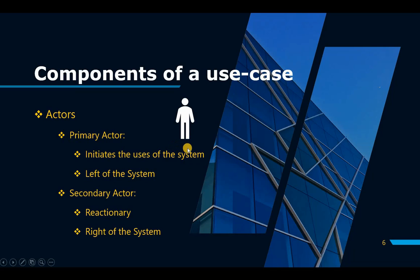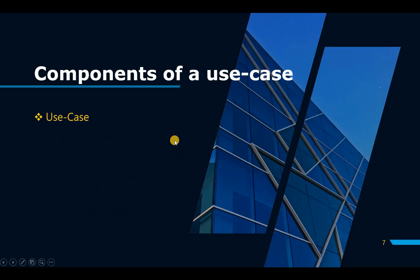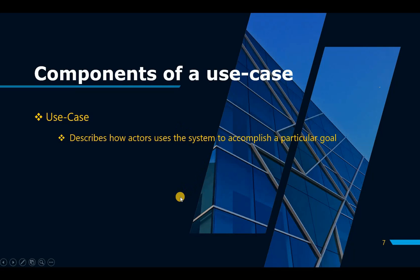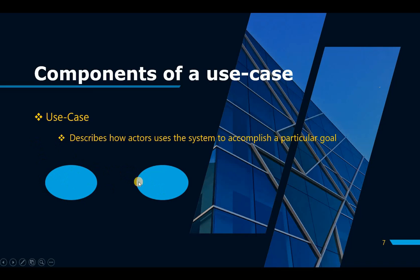A use case describes how the actor is going to accomplish a specific goal within the system, and they're always depicted by oval-shaped circles. We'll look more at the relationship between a base case and an include case, or a general case and a specific case, when we look at the practical example.